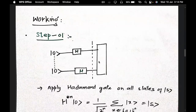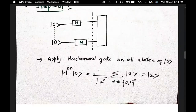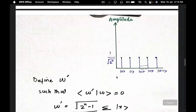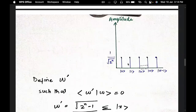Let's see the working step by step. Step one: we apply the Hadamard gate on all states to produce a superposition of all states. The superposition state has amplitude 1 over square root of 2^n (which equals 1 over square root of capital N), and it is the summation of all states from 0 to N minus 1. Initially the amplitude of all those states is equal.